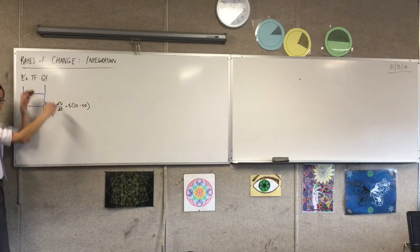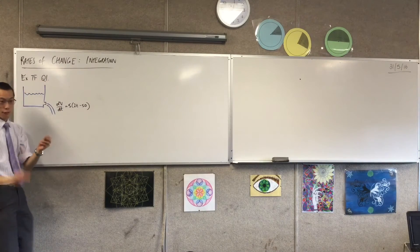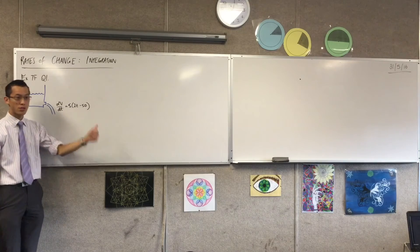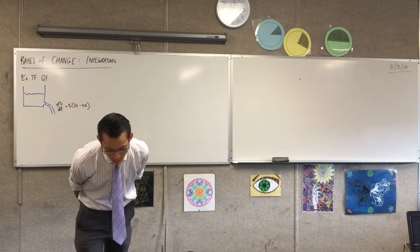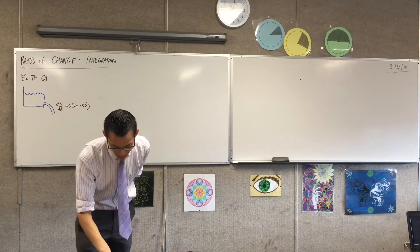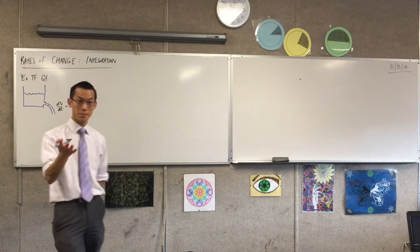So this thing is the volume—the volume is getting smaller. At the first instance, at negative 250, what units are they? It's in litres per minute.